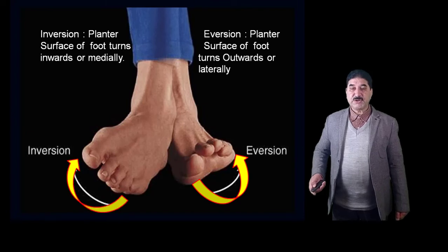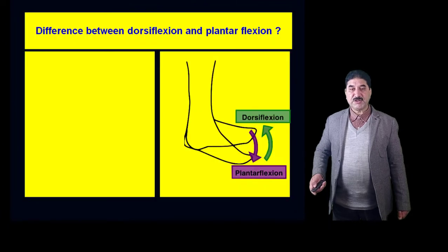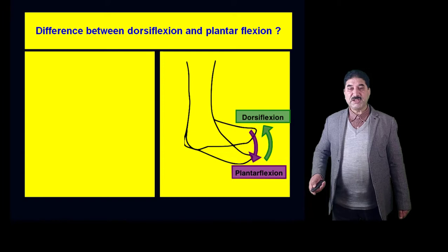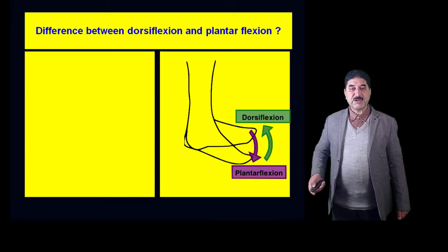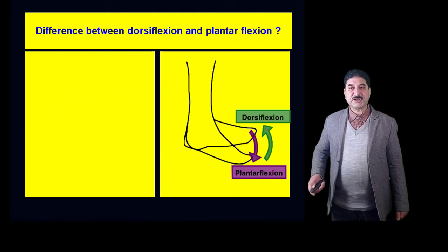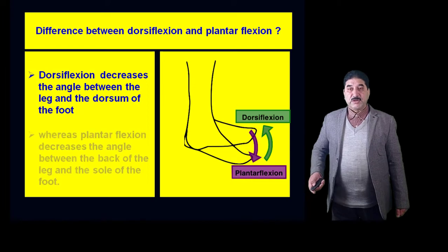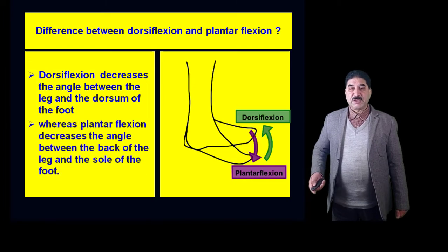Inversion and eversion occur at the subtalar joint. In eversion, the plantar surface of the foot turns outwards and laterally. In contrast, in inversion, the plantar surface of the foot turns inwards and medially. Both movements occur at the subtalar joint. Students often get confused and incorrectly write that inversion and eversion occur at the ankle joint.